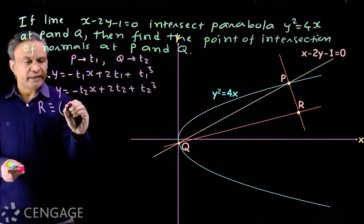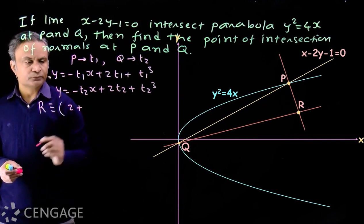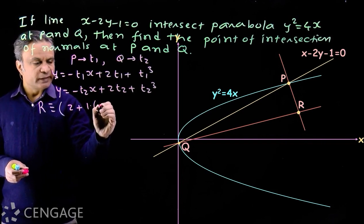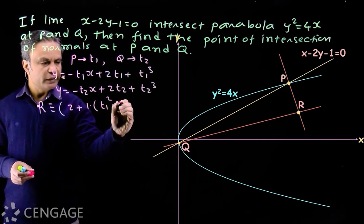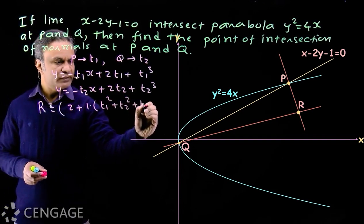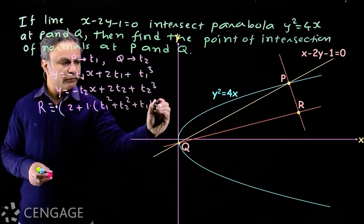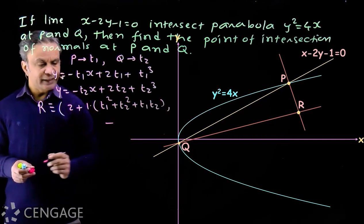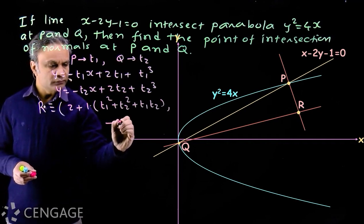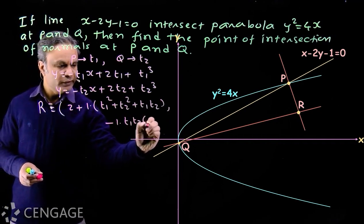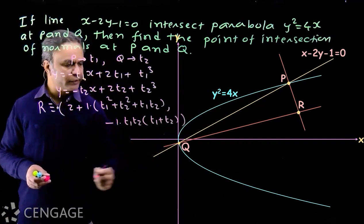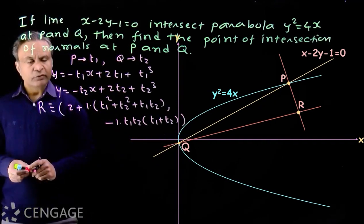The point of intersection of the normals, point R, has coordinates: x = 2 + (t1² + t2² + t1·t2), since a = 1, and y = −t1·t2·(t1 + t2), since a = 1.